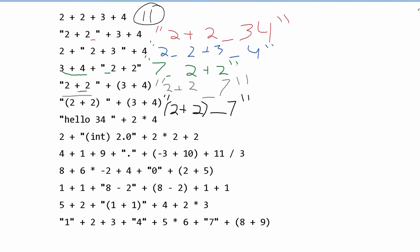Next, we have our string "hello34", and then a combination plus, and then 2 times 4. So first we're going to print out "hello34" — that is what is in our string. And then we have to combine 2 times 4, which is 8. So we'll have an 8 here, giving us "hello348" in quotation marks.